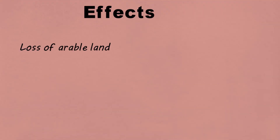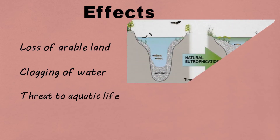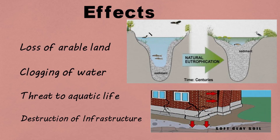Soil erosion has threatened the productivity of fertile areas. Accumulated sediments cause a rise in water level, leading to floods. Silt can smother the breeding of fish. Stability is reduced as support of soil decreases, which in turn causes destruction of infrastructure.